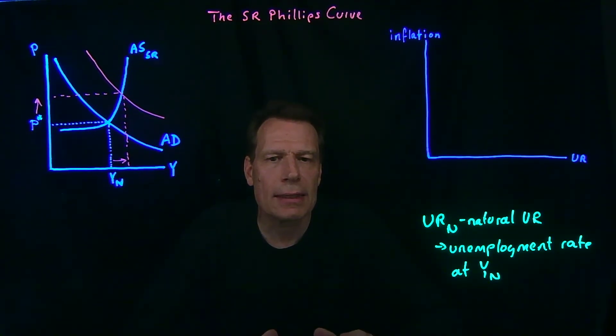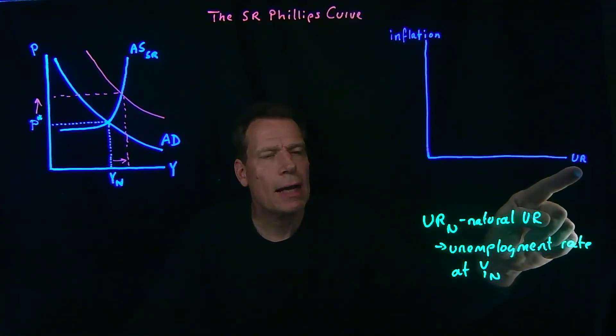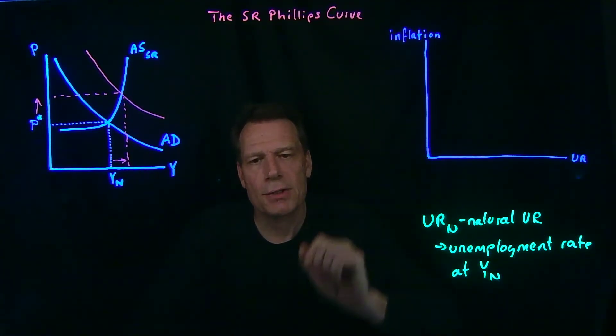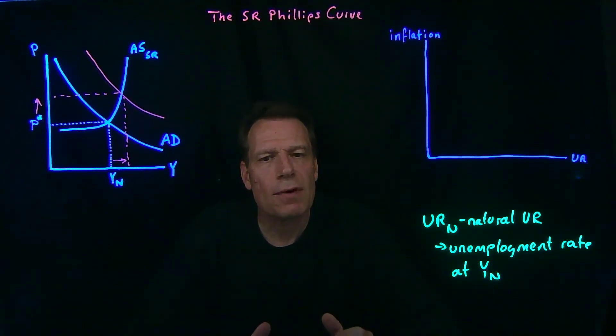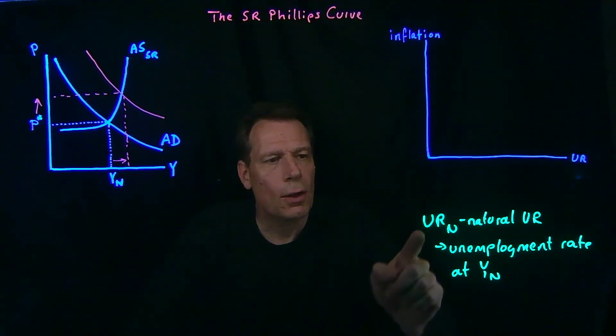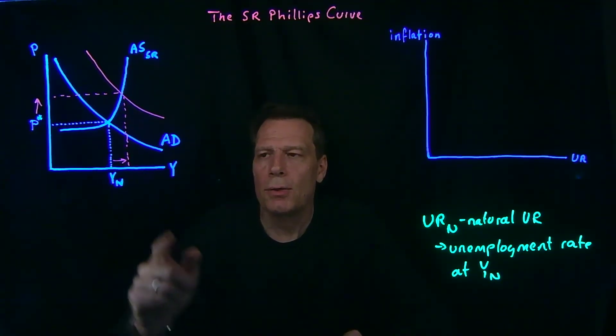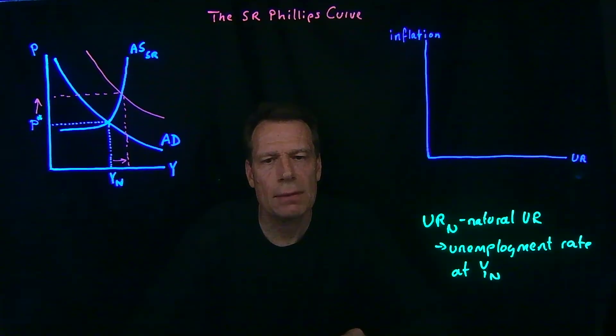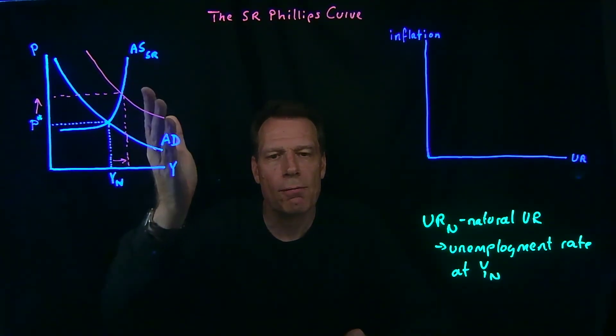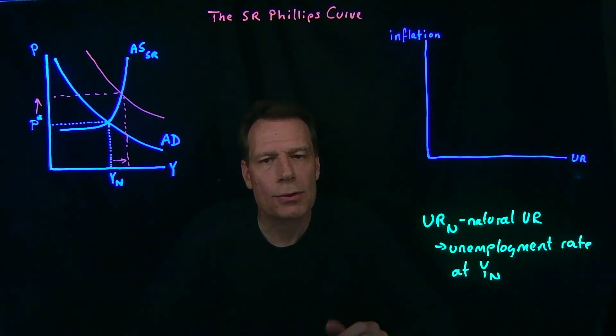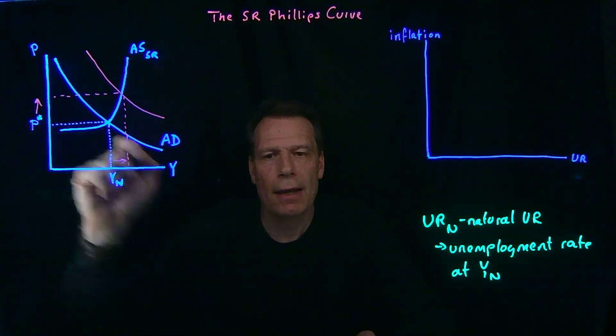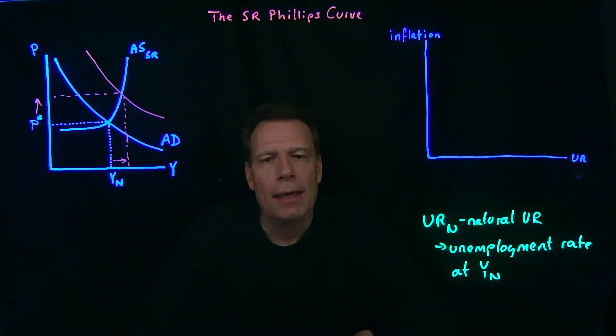That observation led economists in the 1960s to conclude that there's a trade-off between the unemployment rate and inflation. If you want to achieve a lower unemployment rate, lower than the natural rate of unemployment, you can push the economy beyond the natural level of GDP through expansionary government policy. But that will come at a cost. It will come at the cost of higher prices or inflation.